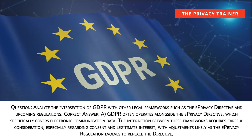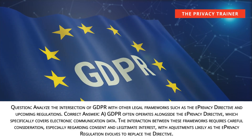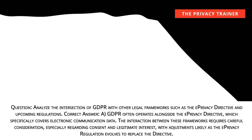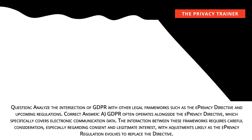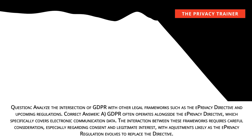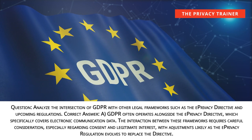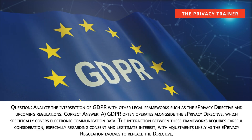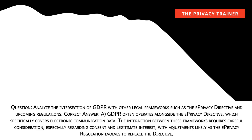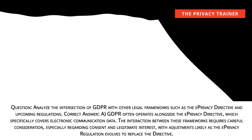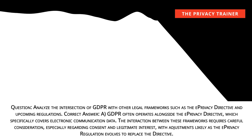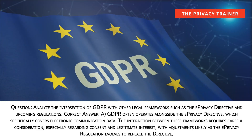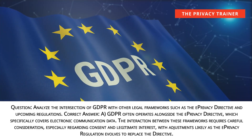Question: Analyze the intersection of GDPR with other legal frameworks such as the e-privacy directive and upcoming regulations. Answer A: GDPR often operates alongside the e-privacy directive, which specifically covers electronic communication data. The interaction between these frameworks requires careful consideration, especially regarding consent and legitimate interest, with adjustments likely as the e-privacy regulation evolves to replace the directive.